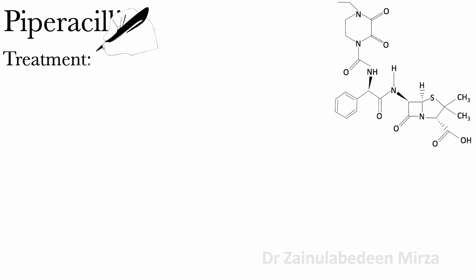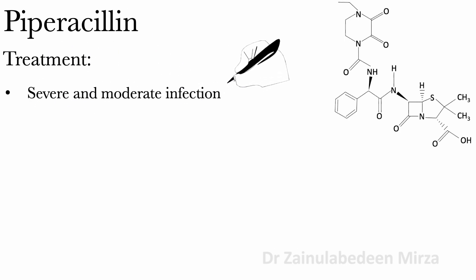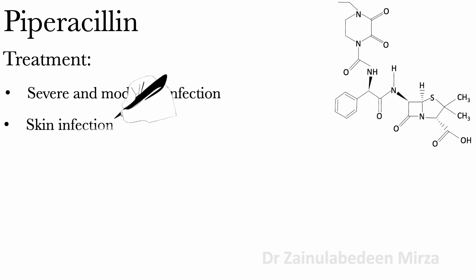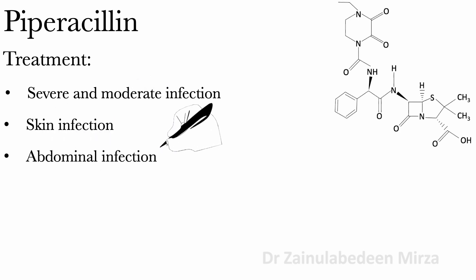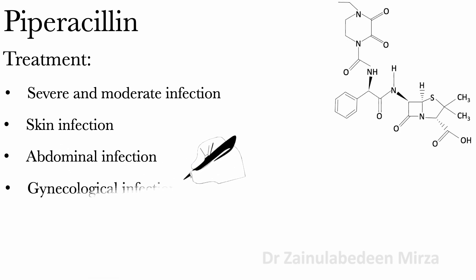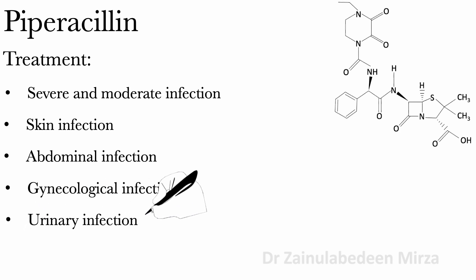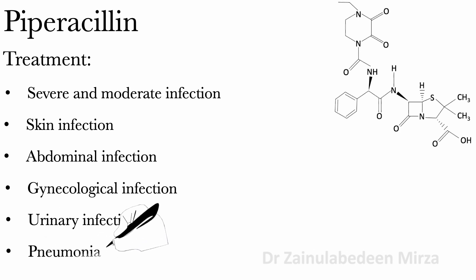Piperacillin is used to treat severe and moderate infections, skin infections, abdominal infections, gynecological infections, urinary infections caused by Pseudomonas aeruginosa, and pneumonia.